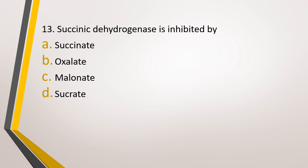Question number 13. Succinic dehydrogenase is inhibited by: option A, succinate; option B, oxalate; option C, malonate; or option D, sucrate. The correct answer is option C, malonate. Succinic dehydrogenase is an enzyme of the citric acid cycle. Succinate is its substrate, and malonate is its competitive inhibitor.